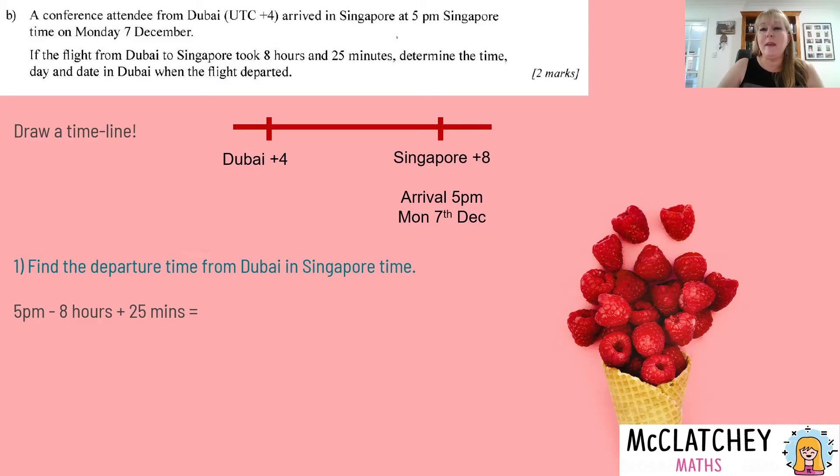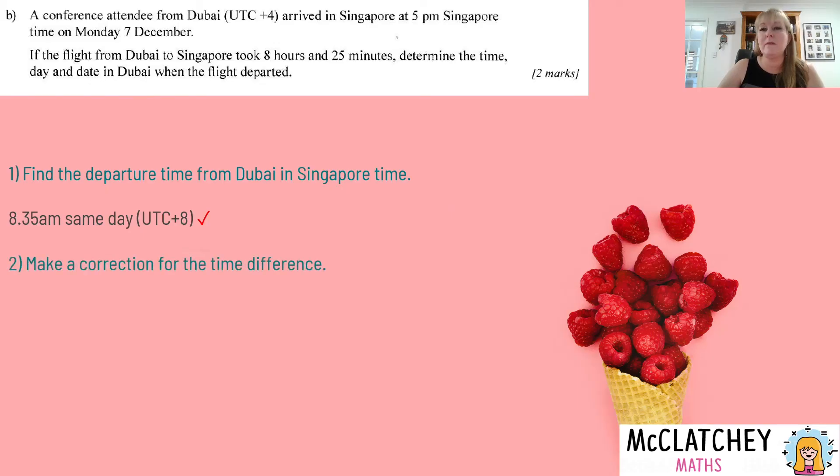Okay, so from 5 p.m. in Singapore time, if we take the 8 hours off and the 25 minutes off, well, we start back at 9 a.m. and then we take the 25 minutes off 9 a.m. and that gets us to 8:35 a.m. the same day. Still Singapore time. Now we do our time difference and make our little adjustment there. We know that there's a four hour time difference because Singapore is four hours ahead. So now we need to take another four hours away, which means that flight left at 4:35 a.m. on Monday the 7th of December. And that was your final mark for this question.